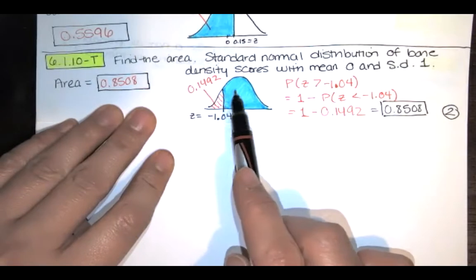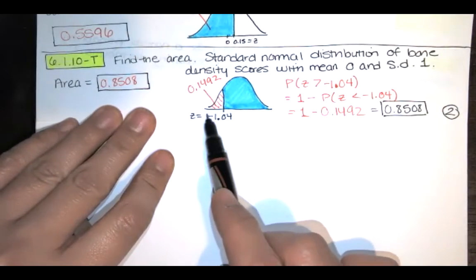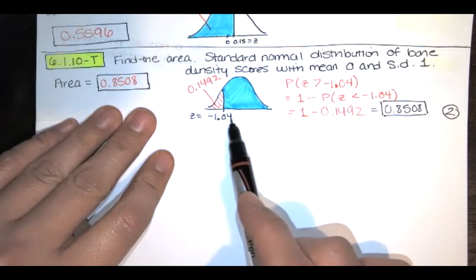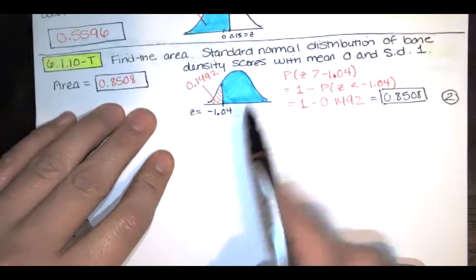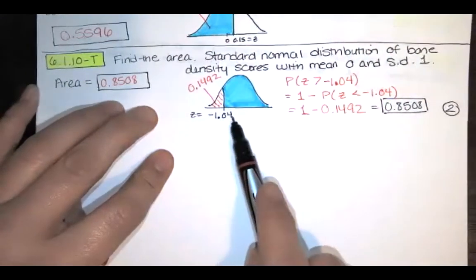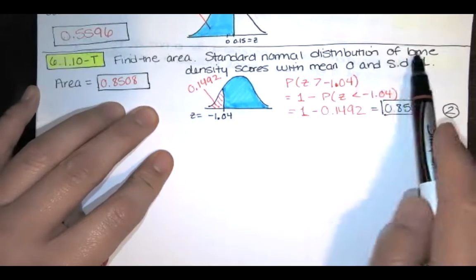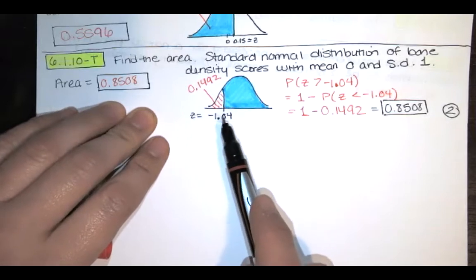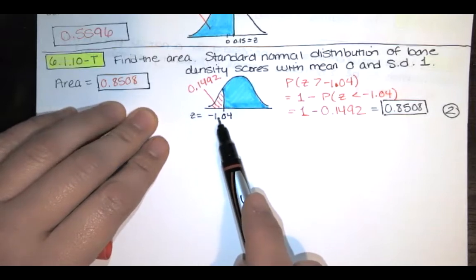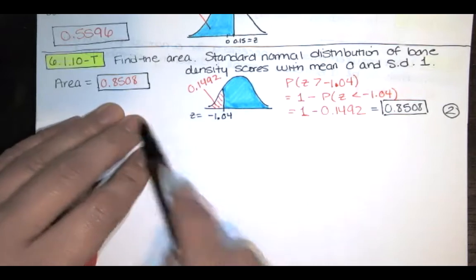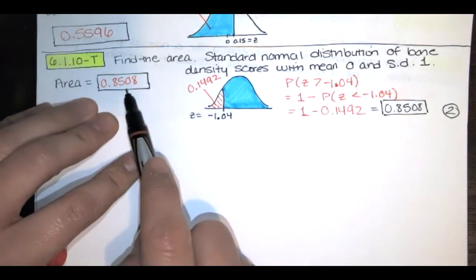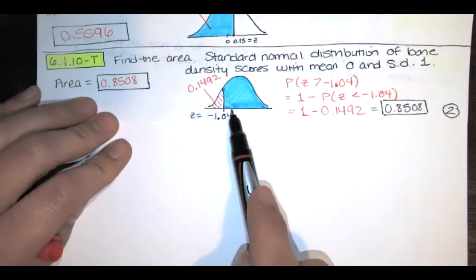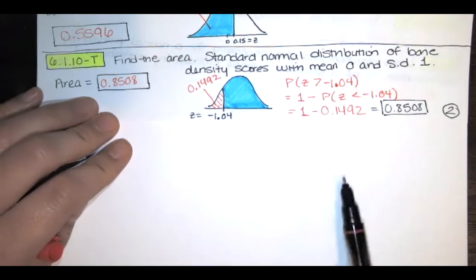what we're saying is that this z-score of negative 1.04, that z-score is the same as a bone density score. We're saying that the probability of having a bone density score that is greater than negative 1.04 is this 0.8508 or you have an 85.08 percent chance of having a bone density score that is greater than that particular score.